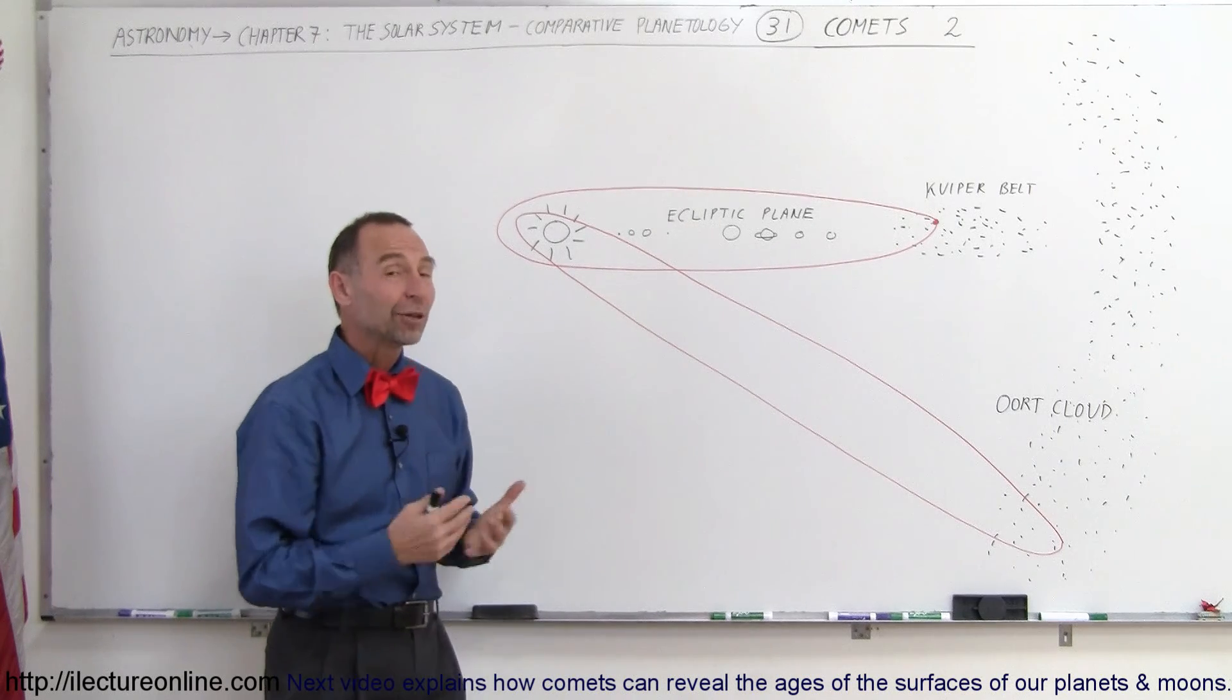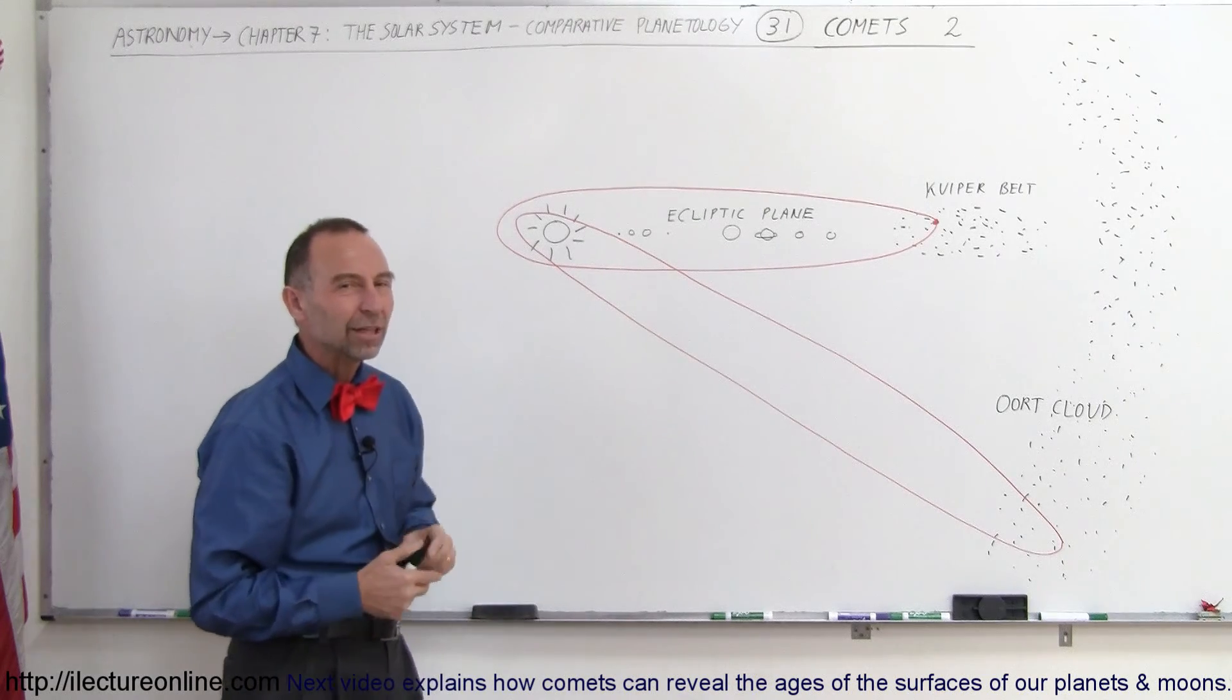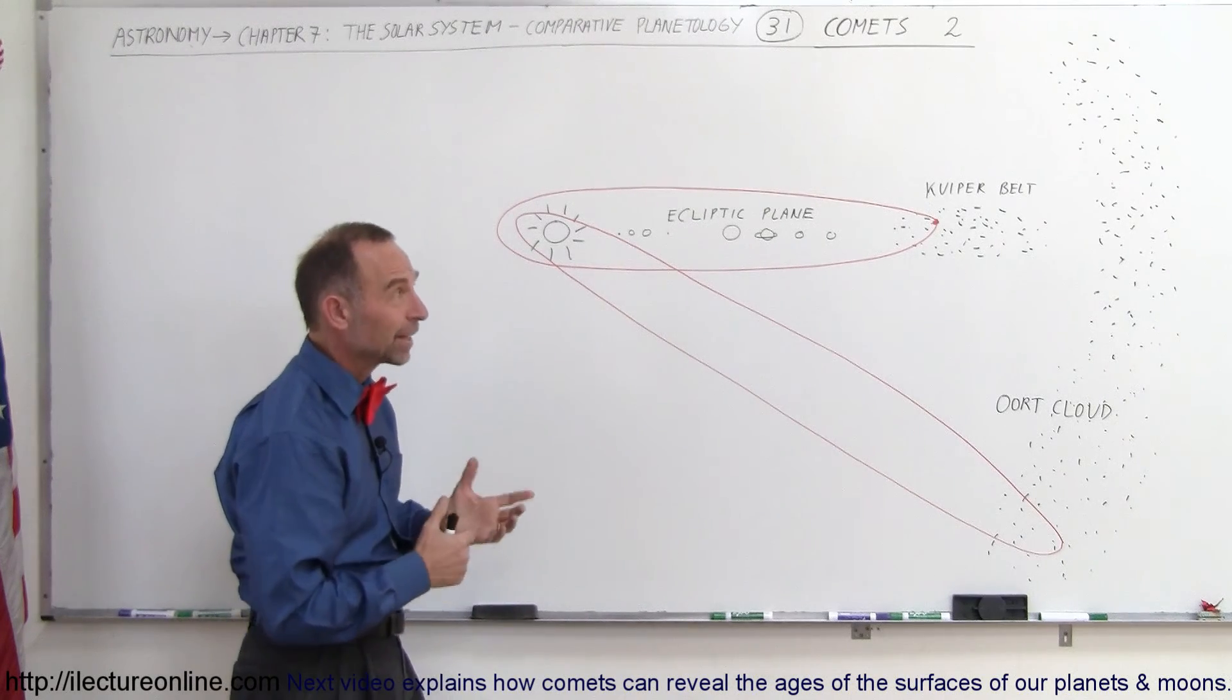And that is another way of looking at our Solar System and how we can figure these things out by observing these comets very carefully. And that's how we do that.